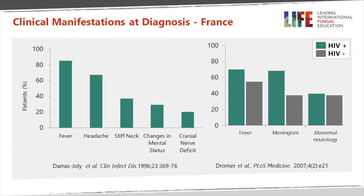Looking at data from France, you get a similar picture but perhaps a slightly higher incidence of cranial nerve deficits and change in mental status. In a more recent paper comparing HIV-positive and HIV-negative patients, fever is a bit more common in HIV, meningism is definitely more common in HIV, but abnormal neurology is equally found in both groups of patients.